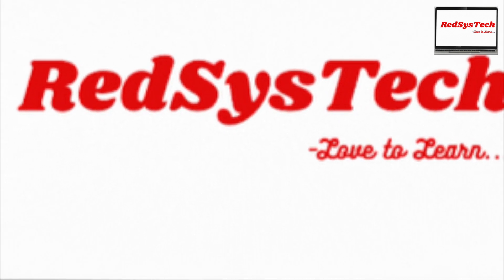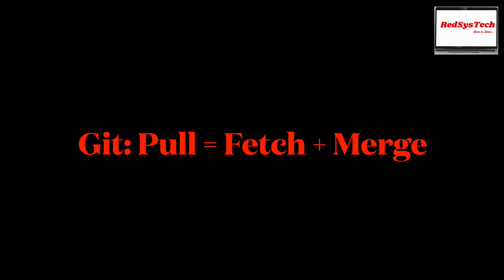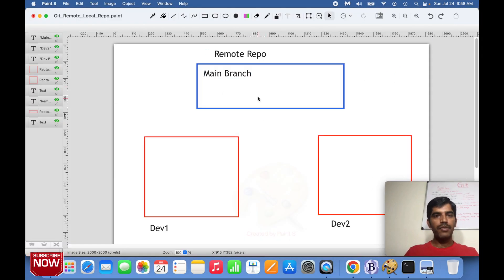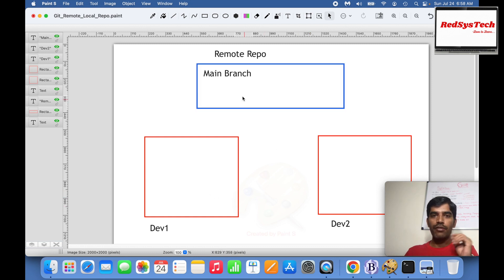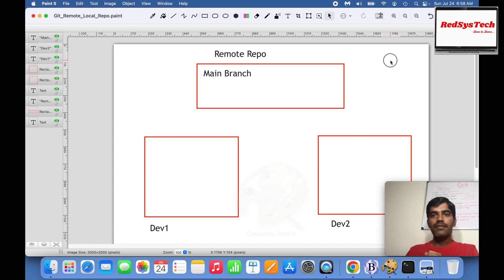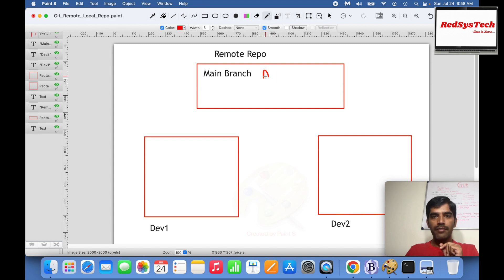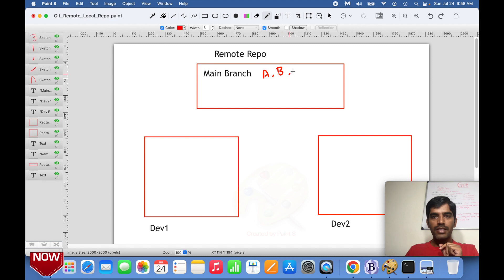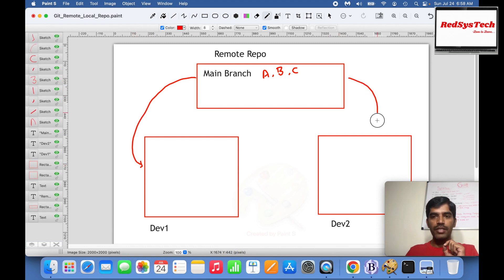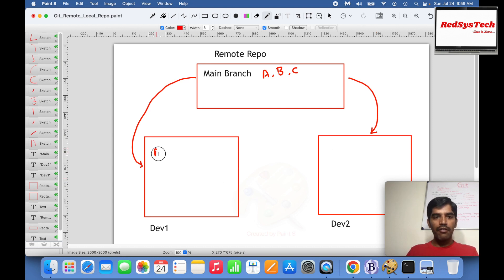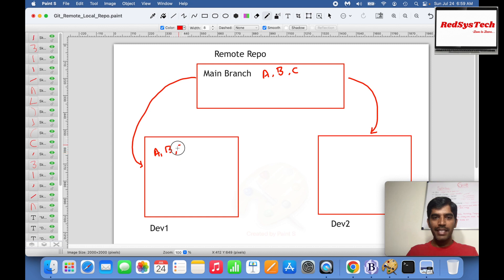Let's say there is one main branch in the remote repository, and there are two developers in the project. Both developers want to work on the project — they take the code from the remote repository to work on their individual tasks. The main branch is like a folder structure, and it already has three features: A, B, and C. Both Developer 1 and Developer 2 clone this to their local, so each has A, B, and C locally.